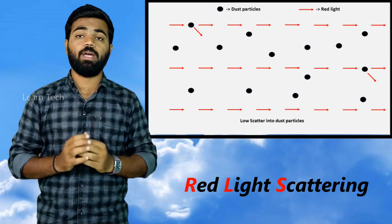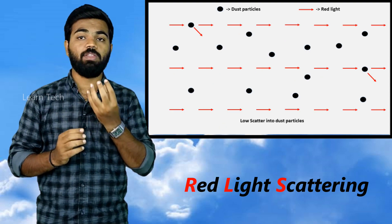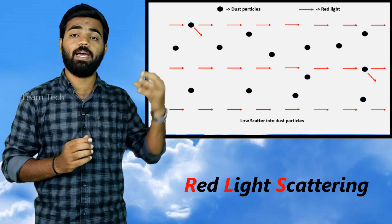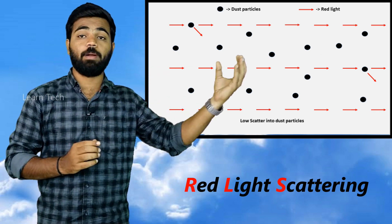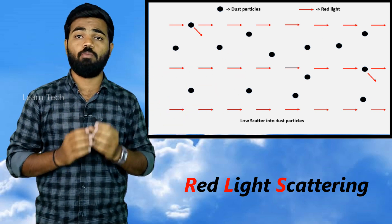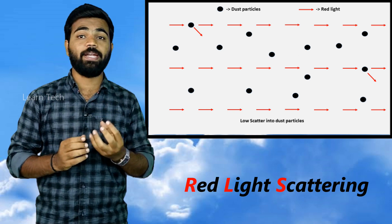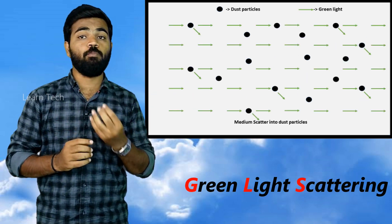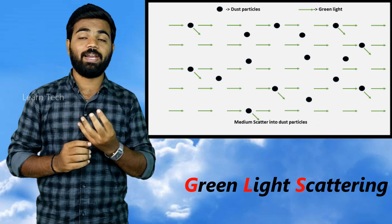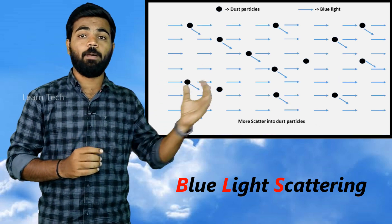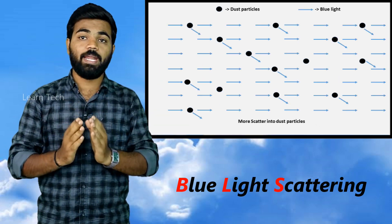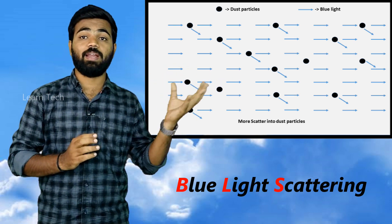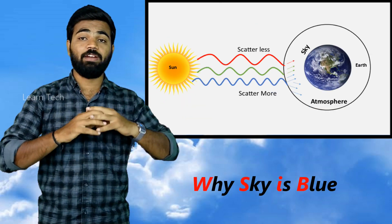Same idea — now there's a dust particle. Now we have red light, it's hit. The chance is very low. But the hit is hit. The green is scattered. But blue light is very low — it's a very low frequency.